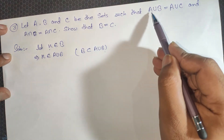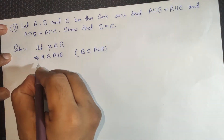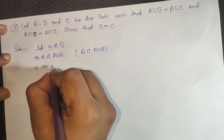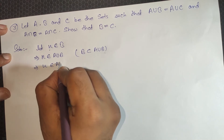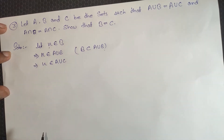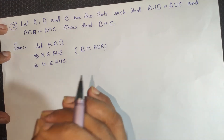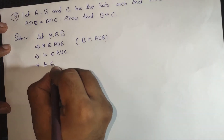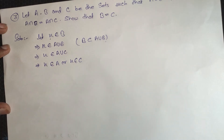Now, since A union B is equal to A union C, we can say that X belongs to A union C as well. A union C means X belongs to A or X belongs to C.